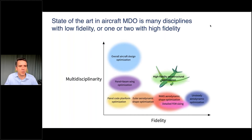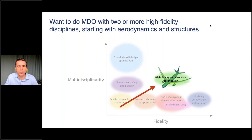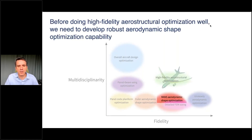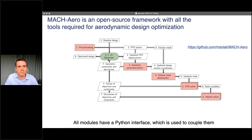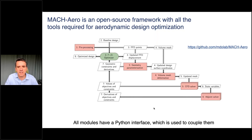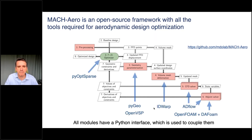When looking at MDO along two axes — number of disciplines and fidelity — we're trying to go diagonally: high fidelity in two or more disciplines. We created an open-source framework called MacAero for aerodynamic shape optimization, solving the Reynolds-Averaged Navier-Stokes equations. It consists of an optimizer, geometry parameterization, volume deformation, CFD solver, and adjoint solver — the module that computes gradients efficiently. All are independent, modular, and interchangeable.